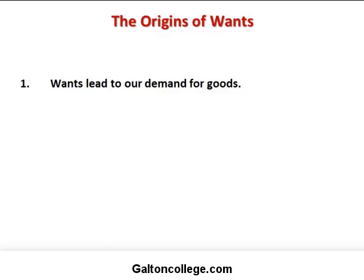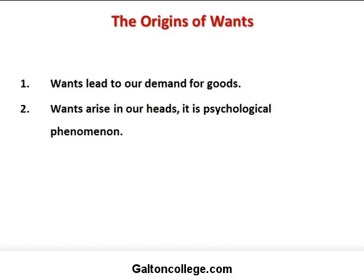Wants lead to our demand for goods. We demand goods and services because we have a want for them. They arise in our heads — it's a psychological phenomenon. It's what we require and how we rate the goods we require, how we prioritize them. That's our evaluation process — the way we think about goods.